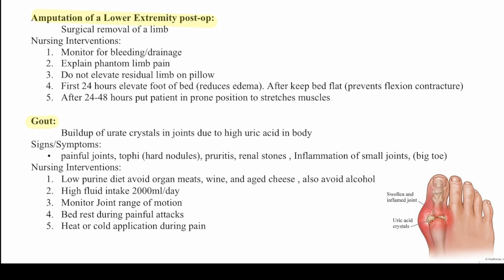Gout is a buildup of uric acid crystals in the joints due to high uric acid in the body. Symptoms include painful joints, tophi (hard nodules), arthritis, renal stones, and inflammation of the small joints — specifically the big toe. If a patient reports inflammation of their big toe, gout should be considered. Nursing interventions: a low purine diet avoiding organ meats, wines, aged cheese, and alcohol; high fluid intake of 2000 milliliters per day; monitor joint range of motion; bed rest during painful attacks; and heat and cold applications for pain.